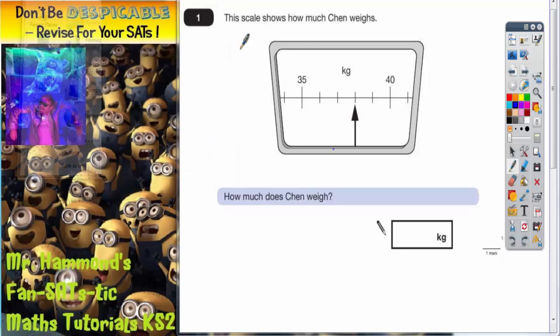Question 1. This scale shows how much Chen weighs and you can see the arrow is pointing somewhere between 35 and 40. We've got to answer how much does Chen weigh. Now sometimes these questions can be a bit harder than this.